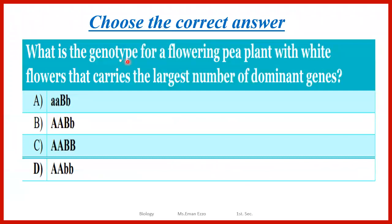What is the genotype for a flowering bee plant with white flowers that carries the largest number of dominant genes? Here, if we think about it, we are going to talk about the complementary genes, which is represented by two pairs of genes instead of one. In order for the dominant trait to appear, we have to have at least one dominant gene in each pair.